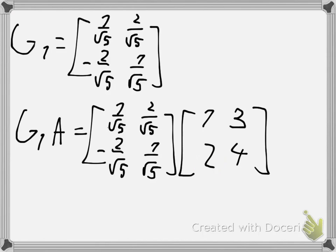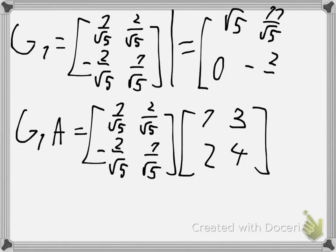And so if we multiply that out, we would get square root of 5, you would get square root of 5, 0 as expected, 3 plus 8, 11 over square root of 5 and negative 2 over square root of 5.